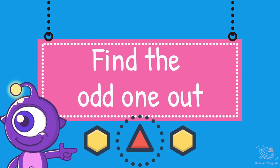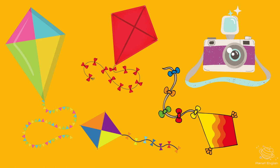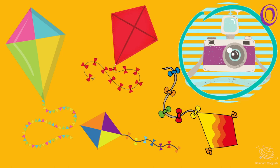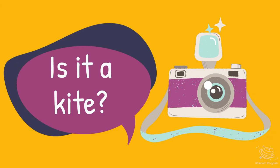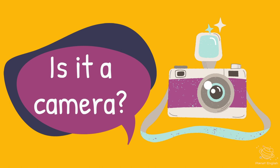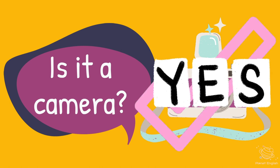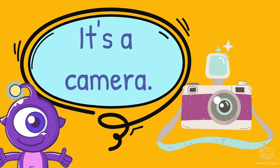Find the odd one out. Hmm, where is the odd one out? 5, 4, 3, 2, 1. Is it a kite? No. Is it a camera? Yes! Well done — it's a camera. Yes!